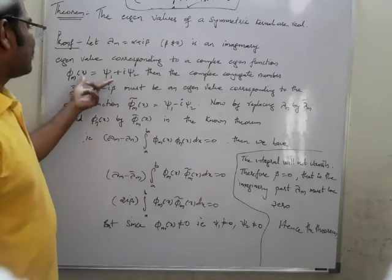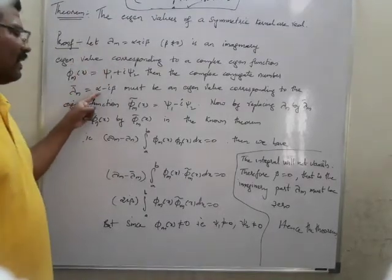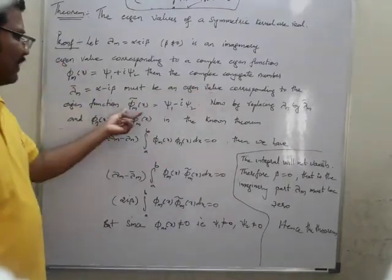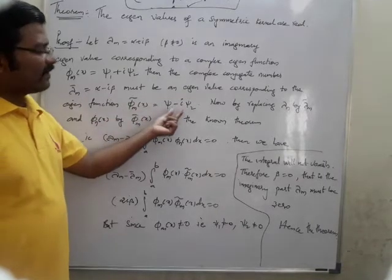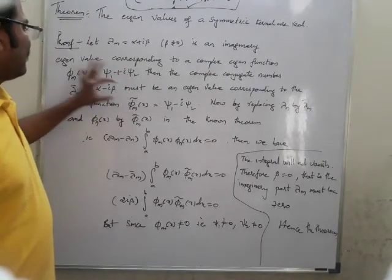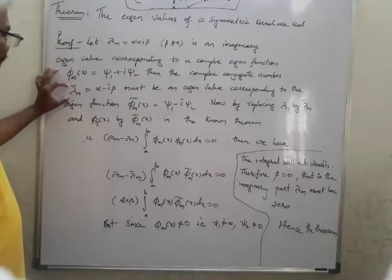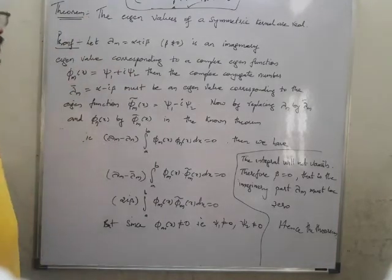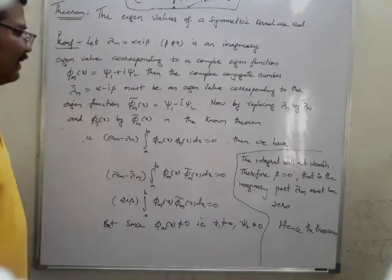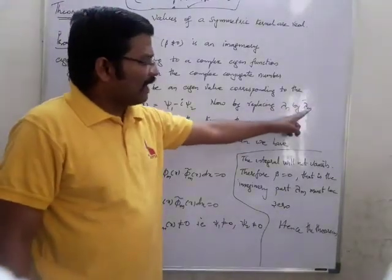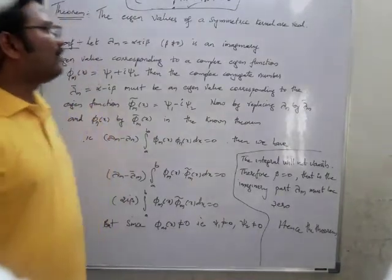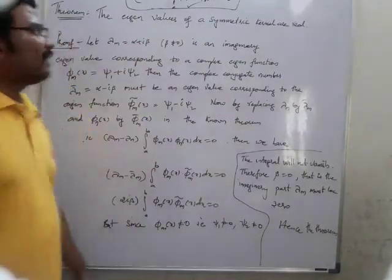Then the complex conjugate of lambda m can be taken as alpha minus i beta. There must be a corresponding eigenfunction to that as well, which is nothing but phi m bar of x — that is psi 1 minus i psi 2. So phi m bar is the complex conjugate function for phi m, and lambda m bar is the conjugate for lambda m. Now we will replace, in the previous theorem, lambda n by lambda m bar and phi n by phi m bar, in order to show that eigenvalues of a symmetric kernel are real.